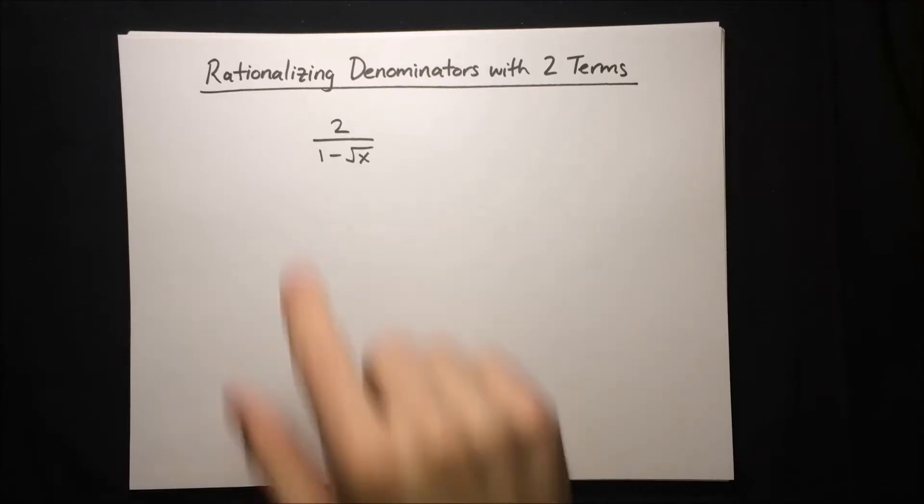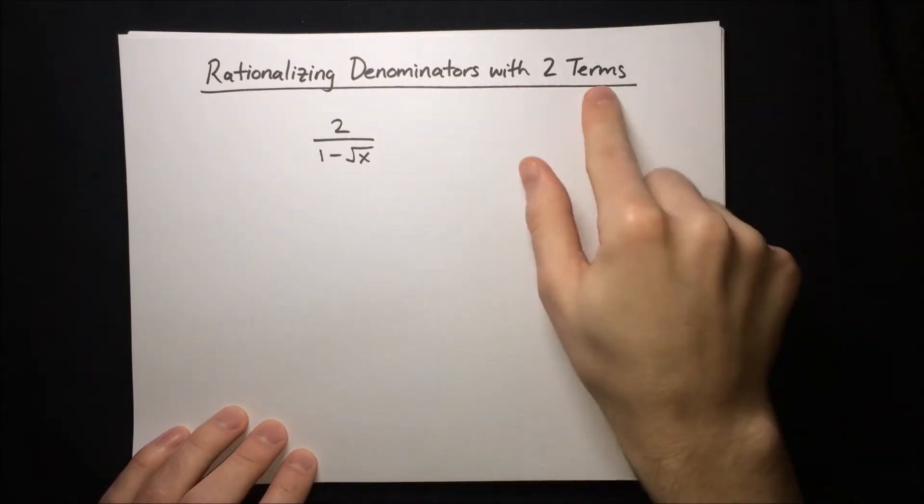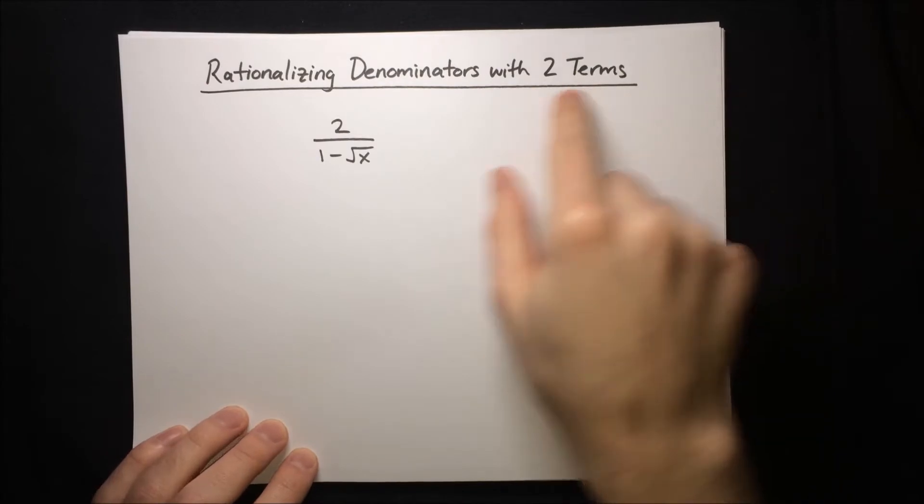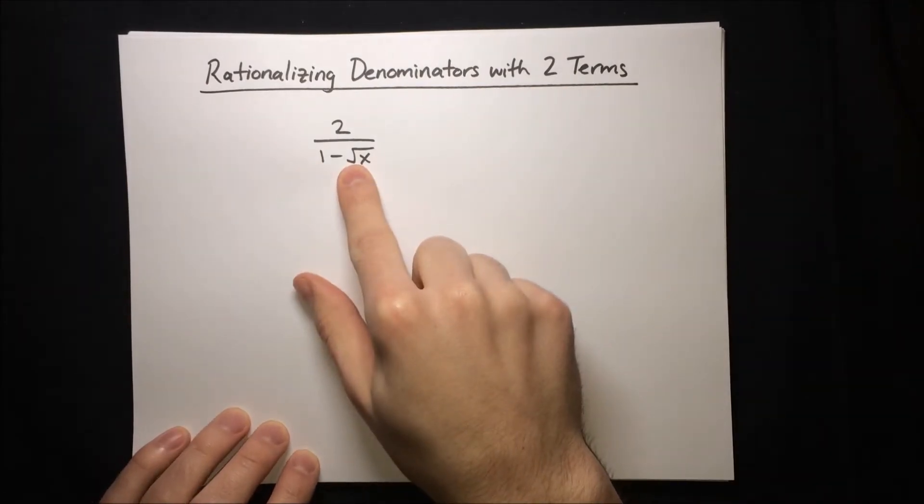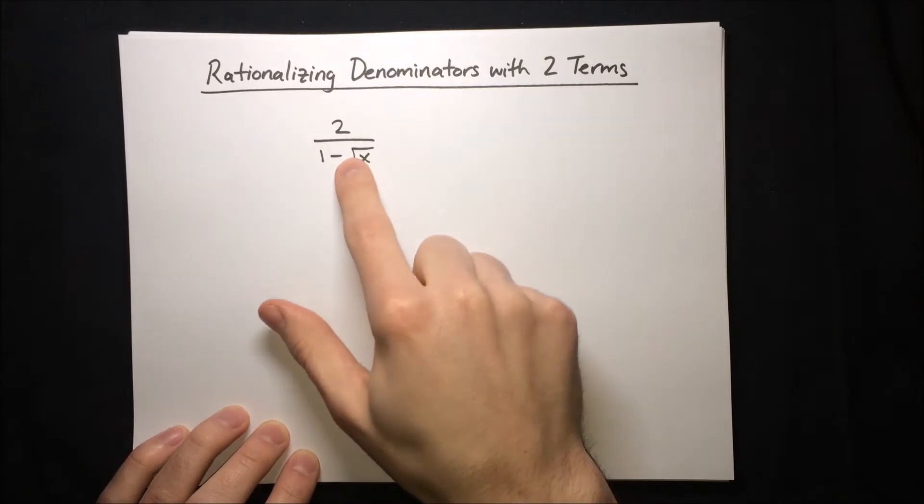In this video, I'm going to show you how to rationalize denominators with two terms. To eliminate radicals in the denominator, we can multiply both the numerator and the denominator by the conjugate of the denominator.